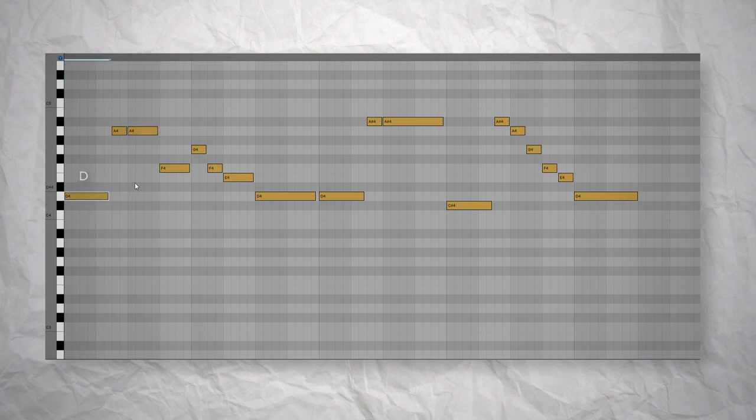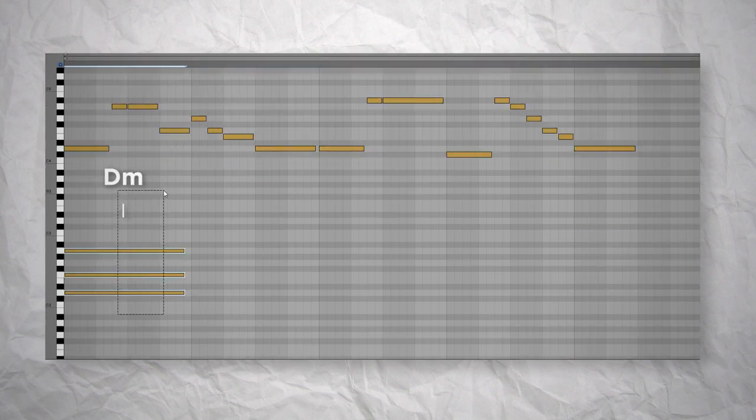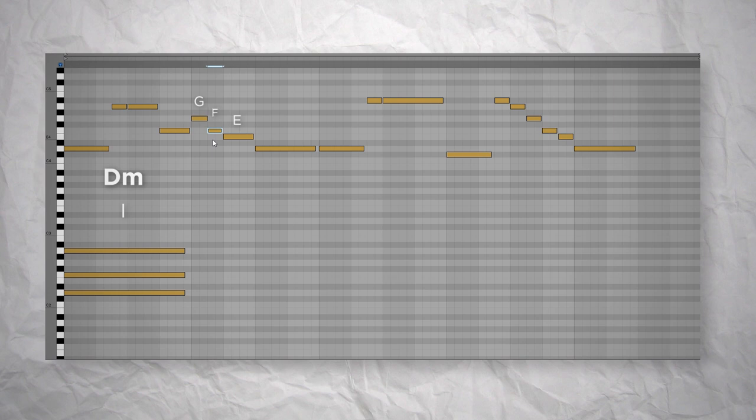In the first bar we have a D, an F and an A, which are the notes of a D minor chord. So let's begin with that. Then we have a G, an F and an E. We can decide to neglect the F because it's on a weak beat so it would be just a passing tone between the G and the E.